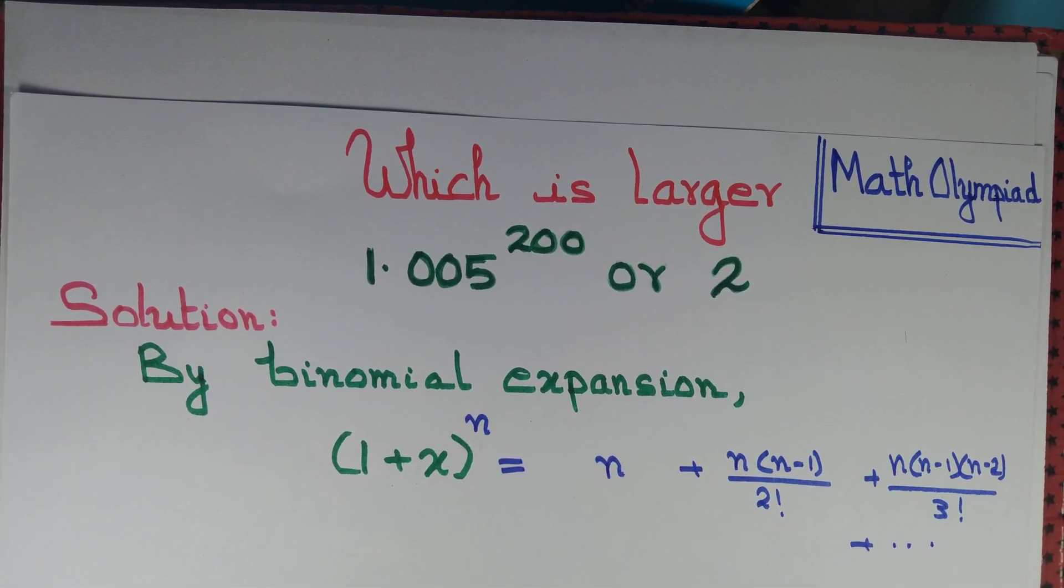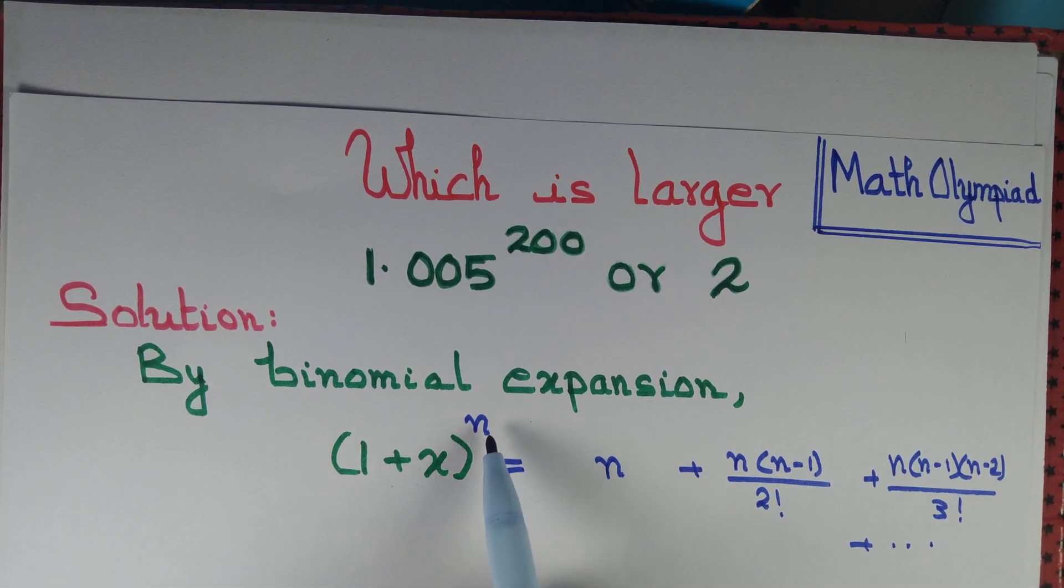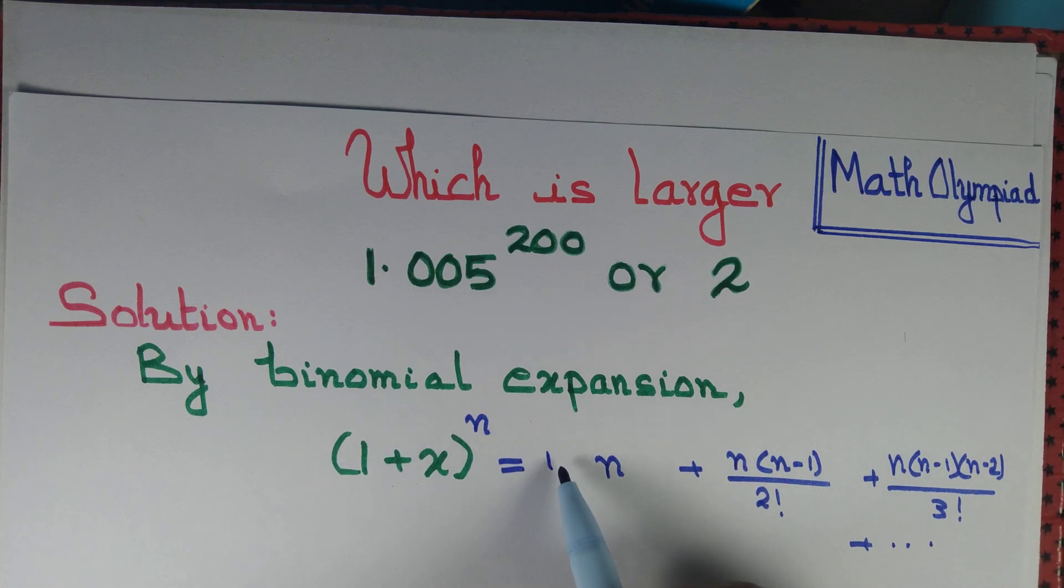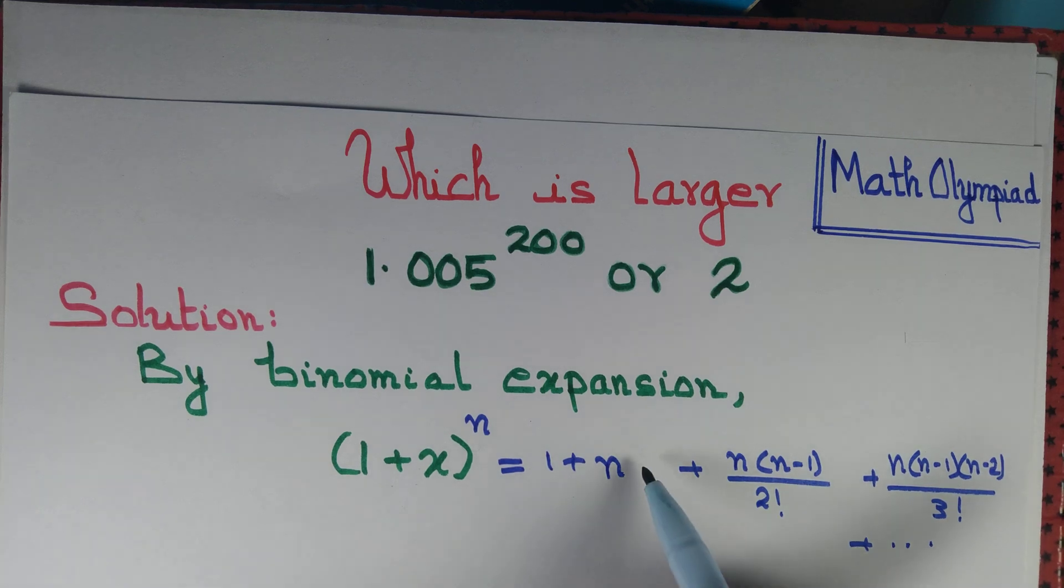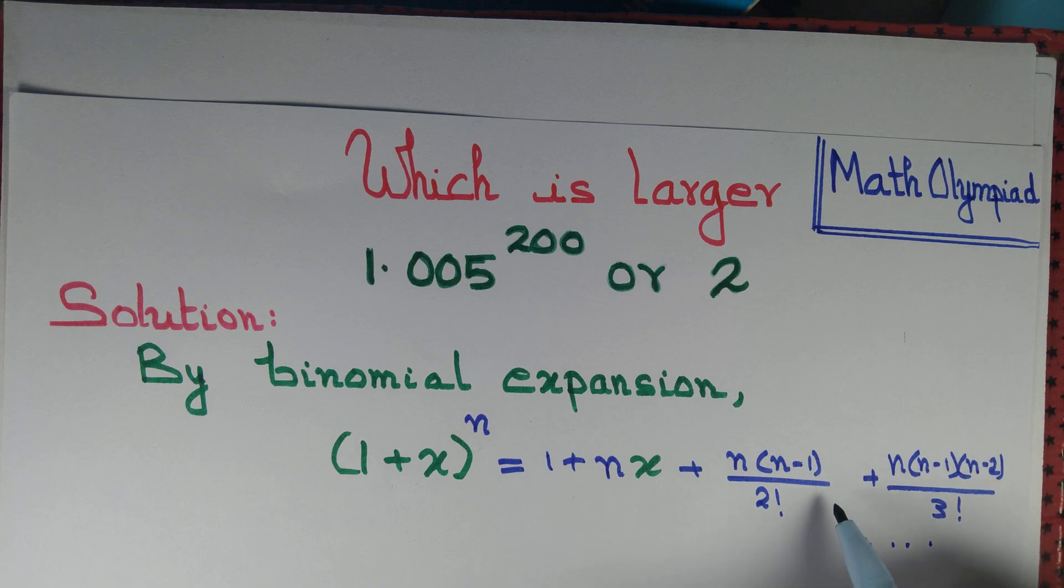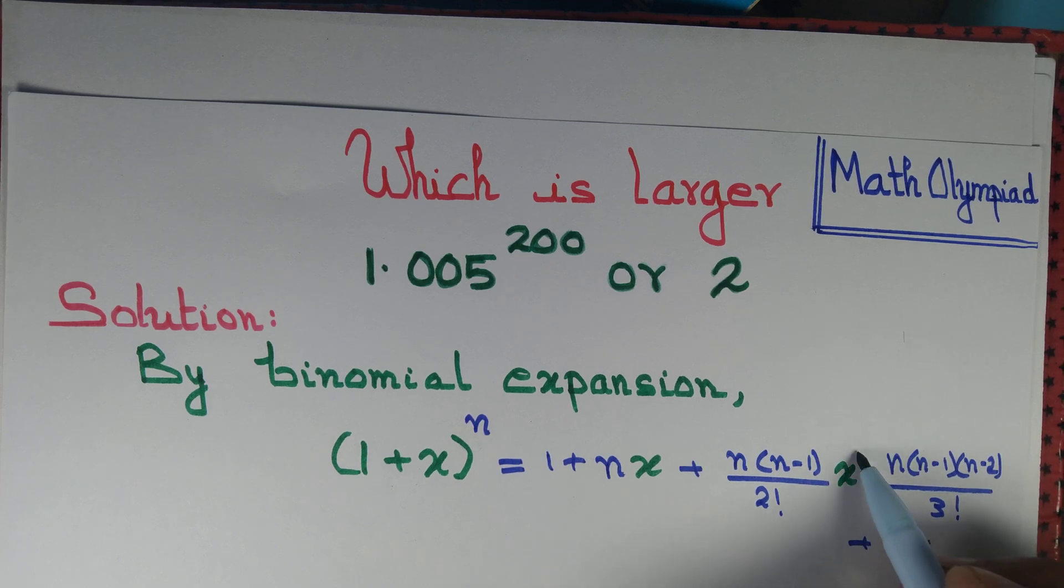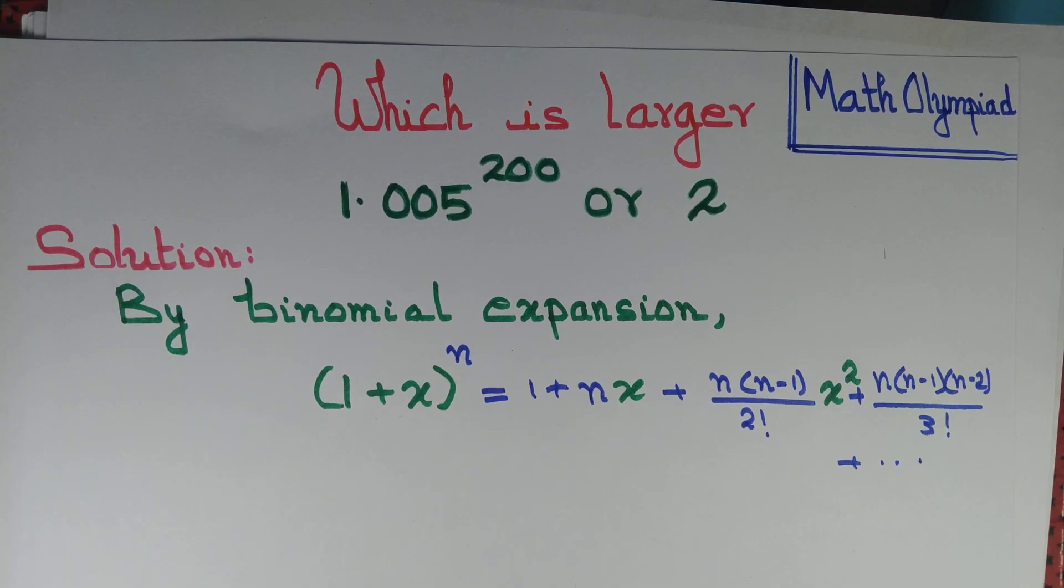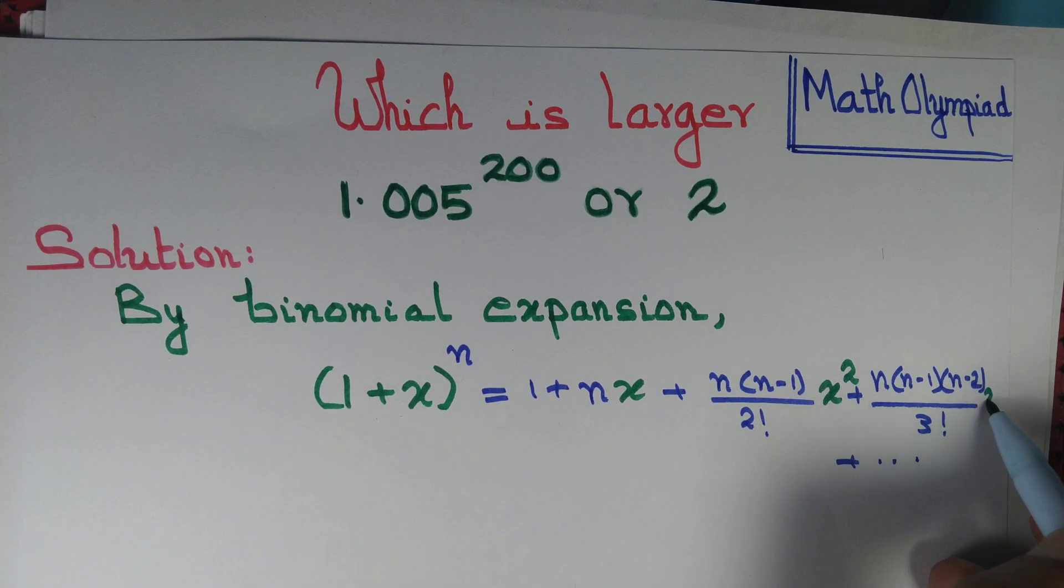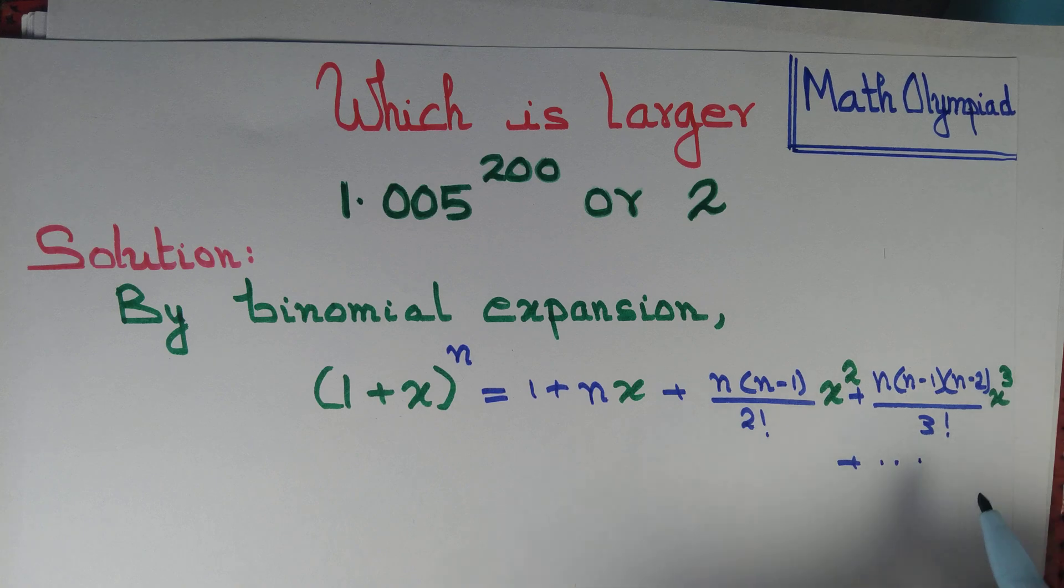By binomial expansion, 1 plus x to the power n is 1 plus nx plus n into n minus 1 by factorial 2 times x square plus n into n minus 1 into n minus 2 by factorial 3 times x cube and so on.